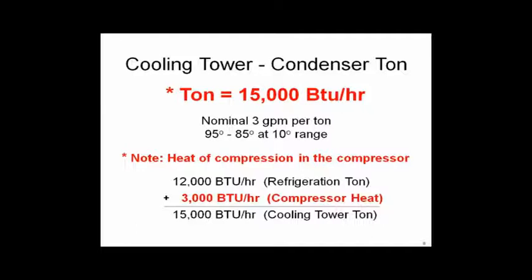Why is it a different number? Remember the KW we put into the chiller compressor to raise the low-pressure gas to high-pressure gas? That's work — KW going into the centrifugal or reciprocating motor — and that KW winds up in the cooling tower load. Nominally that's 3,000 BTUs per ton as defined by CTI. So if you buy a cooling tower rated for 1,000 tons, it's rated at 15,000 BTUs per ton, not 12,000, because of the compressor heat added.